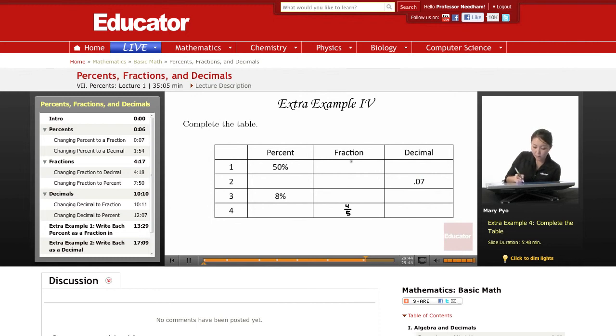So percent to a fraction. Remember, any time I want to change a percent to a fraction, I just put it over 100. So this will be 50 over 100. That's it, but I just have to simplify. So 50 over 100, again, 50 goes into both the top and the bottom, so I can just divide. This is just 1 over 2.